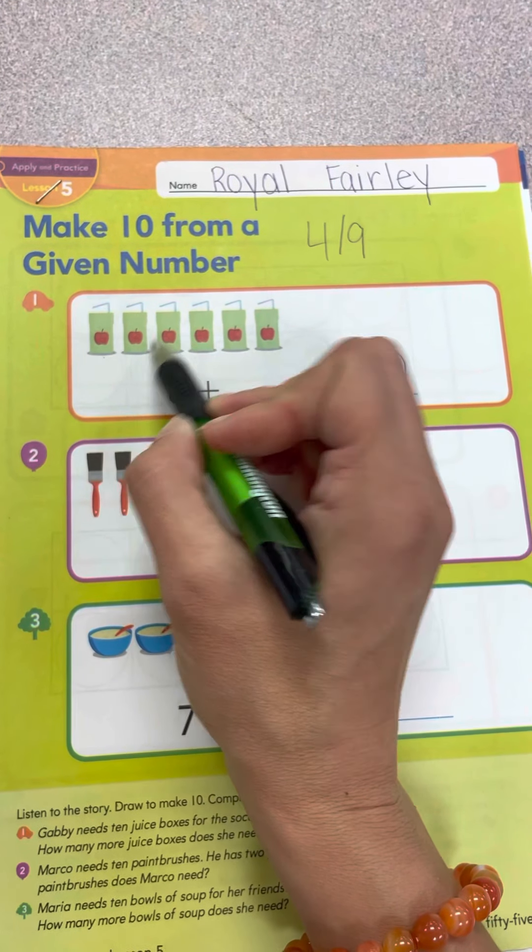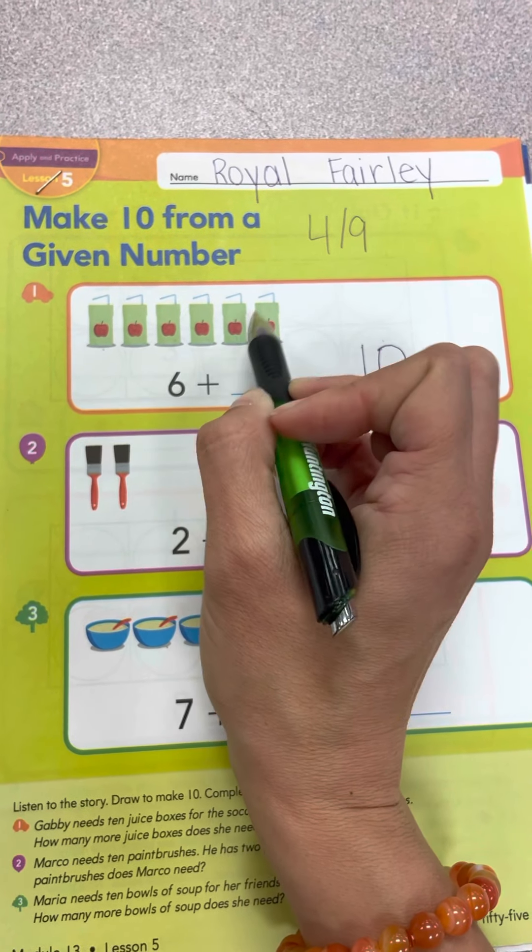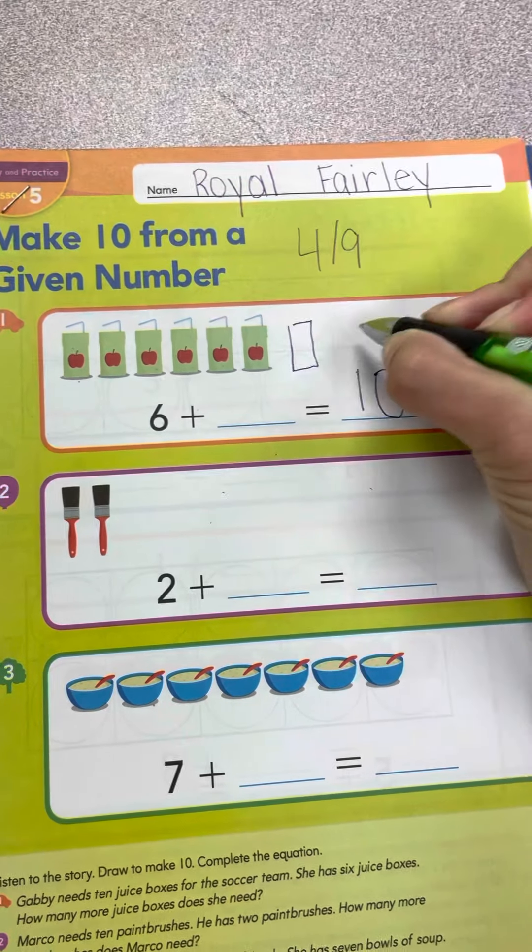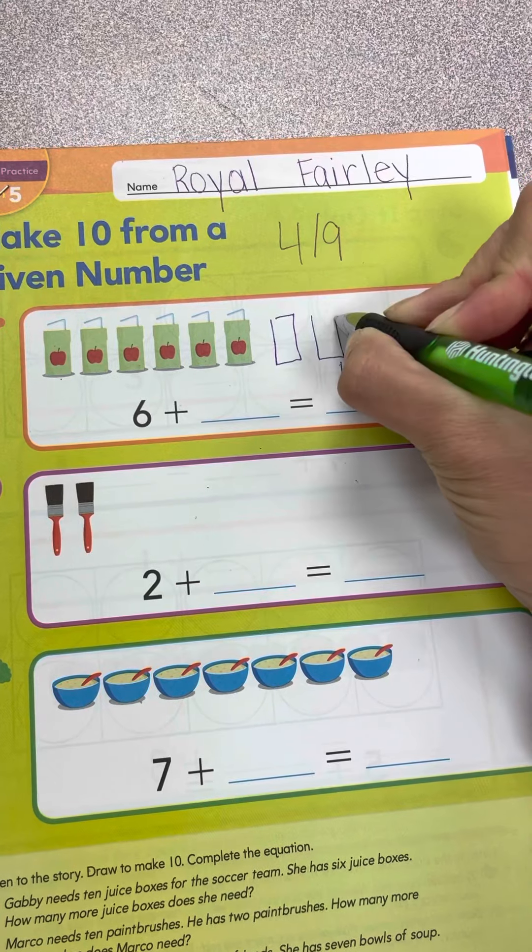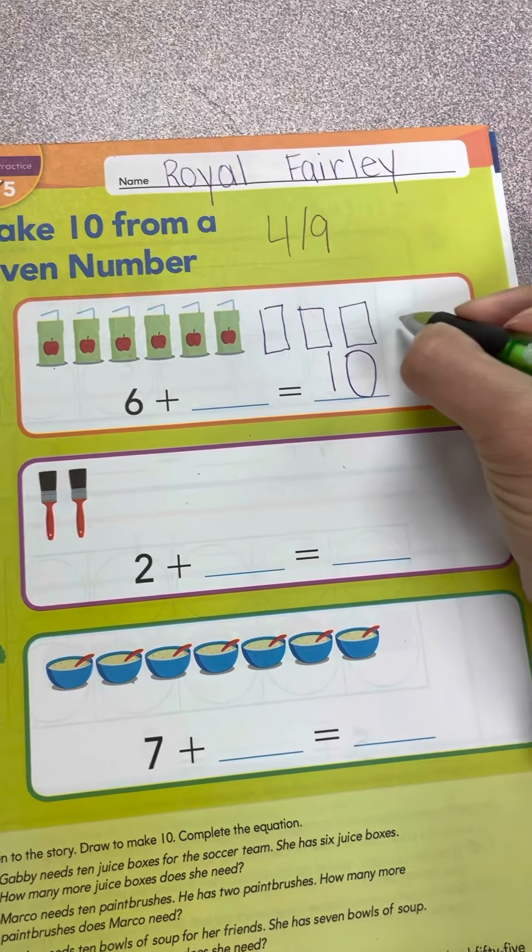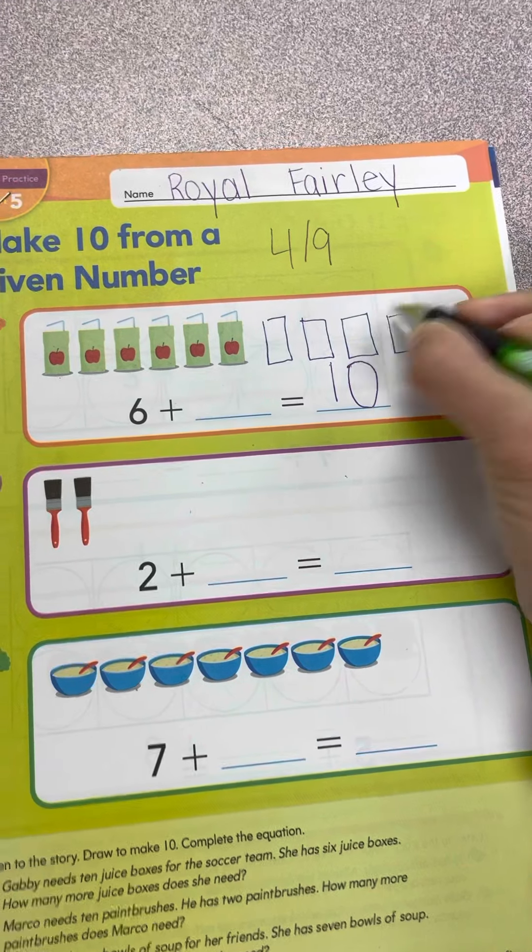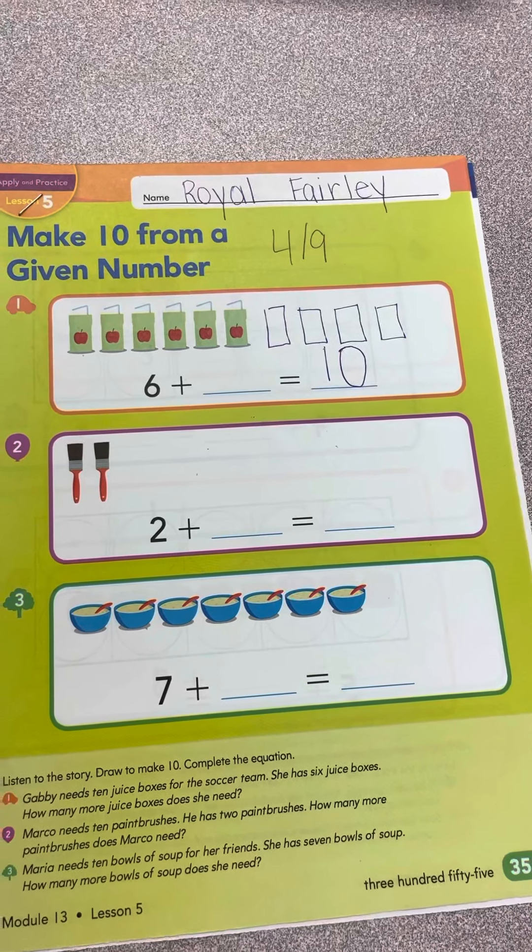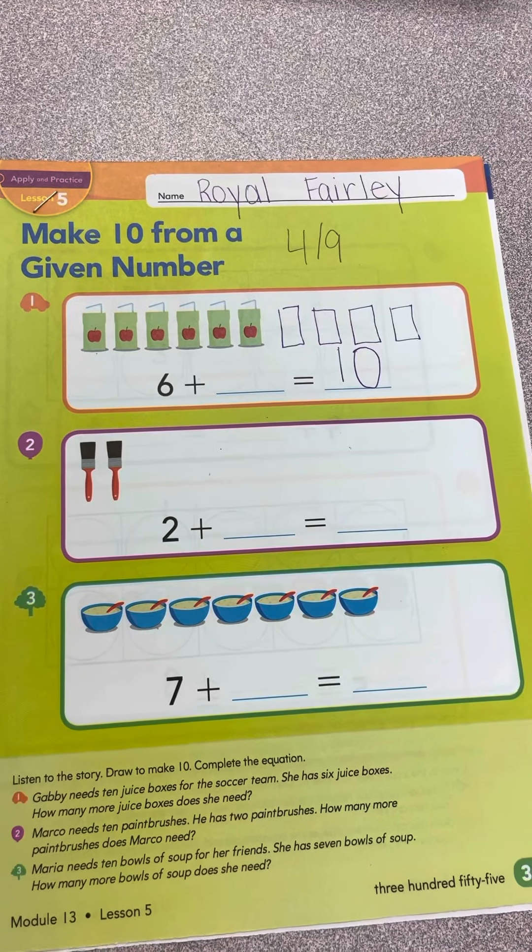1, 2, 3, 4, 5, 6, 7, 8, 9, 10. Once we get to 10 we stop. So how many more boxes did we make?